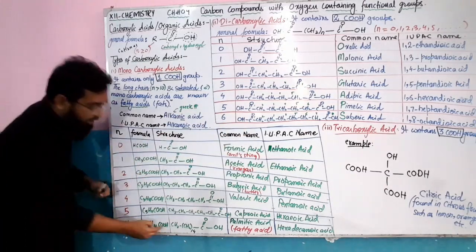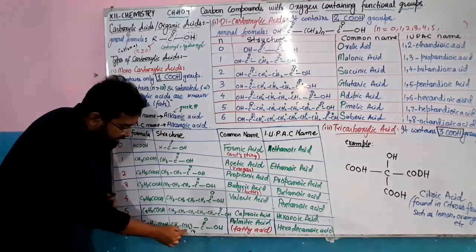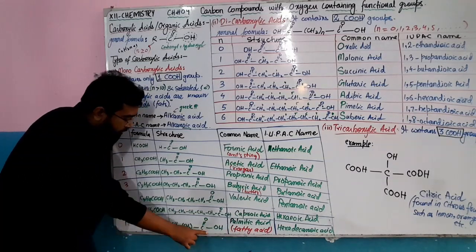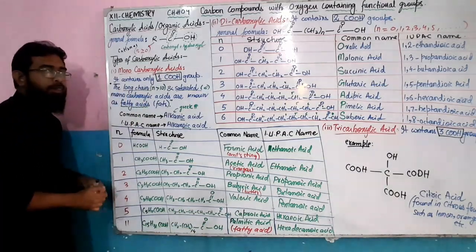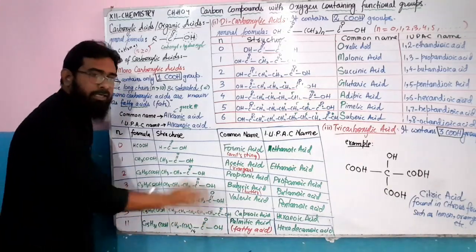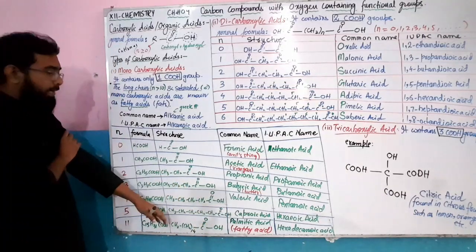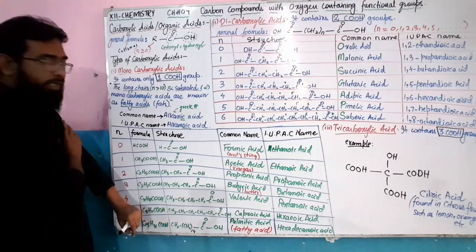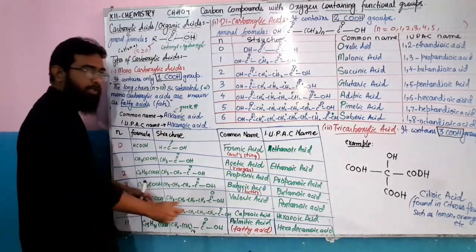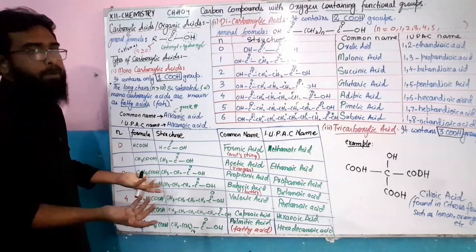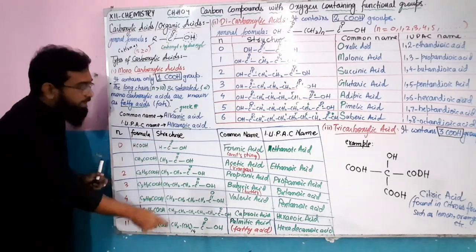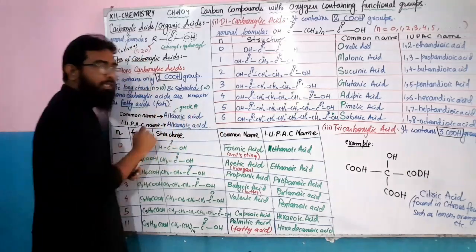For logical sense when drawing structures, if there is no space, we use the condensed structure. For the 16-carbon compound, we write CH2 groups and then COOH: 14 plus 1 equals 15, plus 1 equals 16 — total 16 carbons. The condensed structure can be expanded, but since there's no room on the page, we condense it. This is a logical approach, not a structural error.